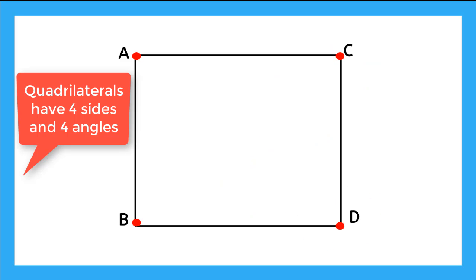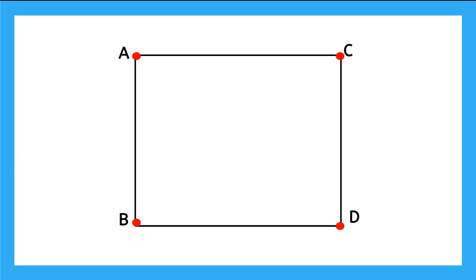A quadrilateral is a shape with four sides and four angles. A quadrilateral has four angles named ACD, BAC, CDB, and DBA.